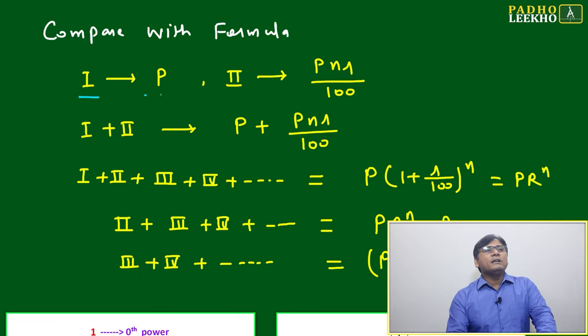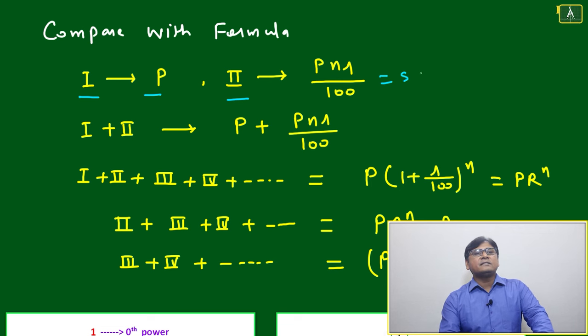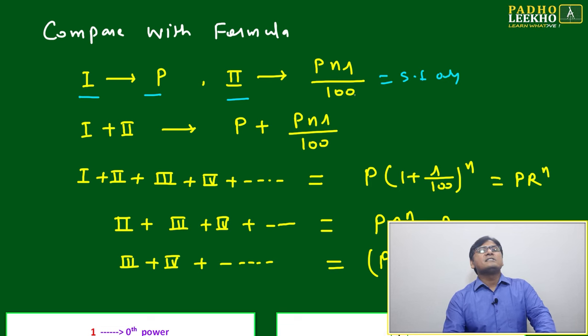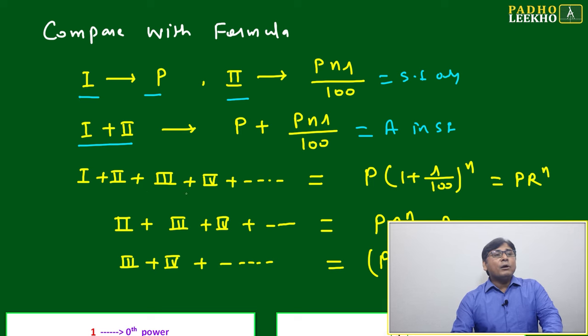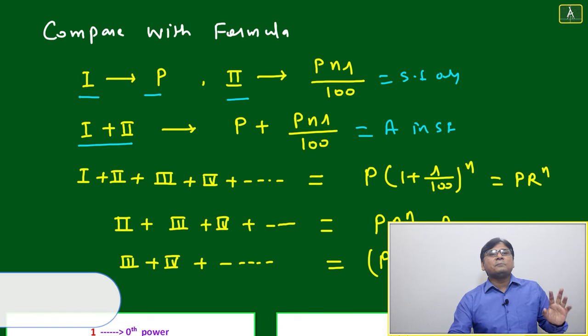Now we'll compare with the formula. Line one, this is your principal amount. Line two, that is your simple interest only, P and R by 100. Line 1 plus 2, that is your amount in simple interest, means P plus PR by 100. Line 1 plus 2 plus 3 plus 4, this will give you onward whatever is the number of lines depends on the value of n.